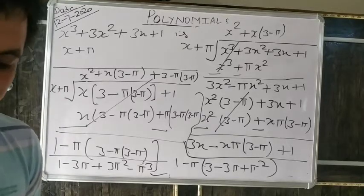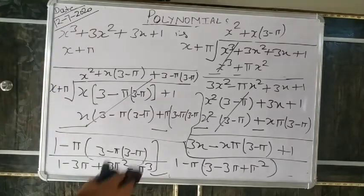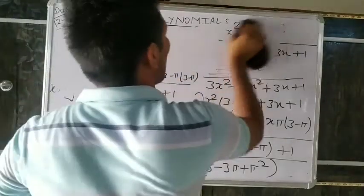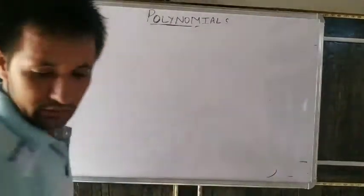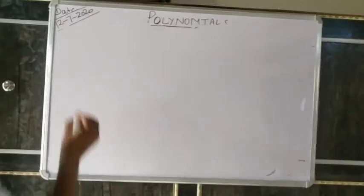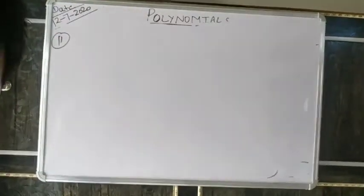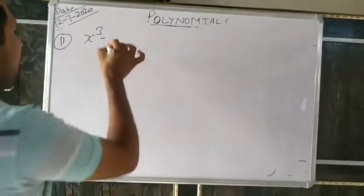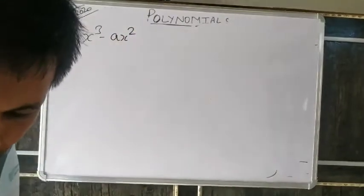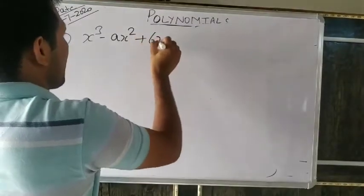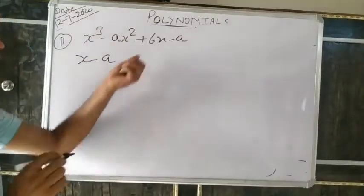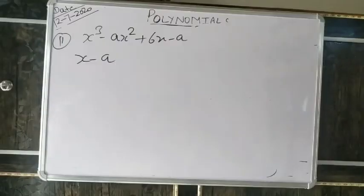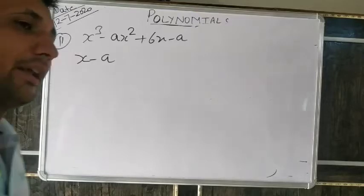Second question, same as it is, we will divide in all parts. The second part: find the remainder when x³ − ax² + 6x − a is divided by x − a. When this polynomial is divided by this one, what is the remainder? Remainder theorem — but note this is not in our syllabus.